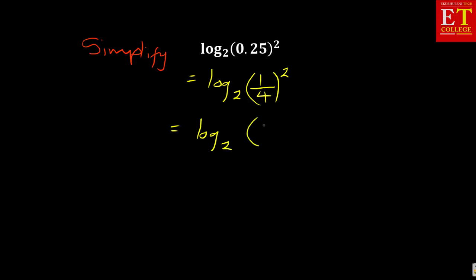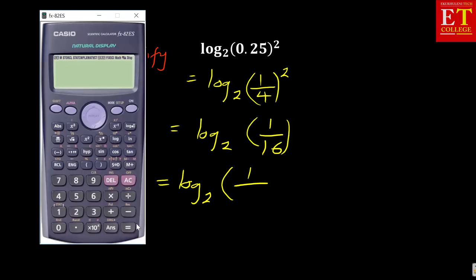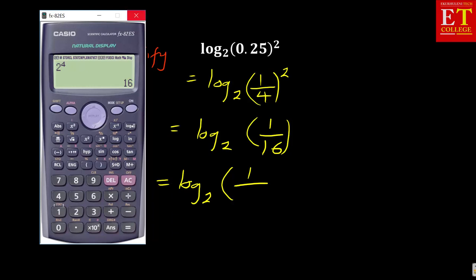You can see this is 1 over 4 to the power 2. You can continue and say this is same as log 2. Then 1 over 4 squared is same as 1 over 16, which is equal to log base 2. This is same as 1 over, 16 in terms of 2. 2 to the power of 5 is 32. So 2 to the power of 4 is 16. So 16 is same as 2 to the power of 4.